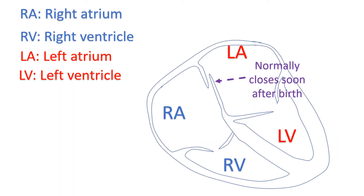Foramen ovale is an oblique opening through the wall between the two upper chambers of the heart. When the pressure in the left atrium rises after birth as the lungs become functional, it presses on the left side of the opening and closes it. If there is a residual opening, most of the time there is no leakage of blood across the PFO.